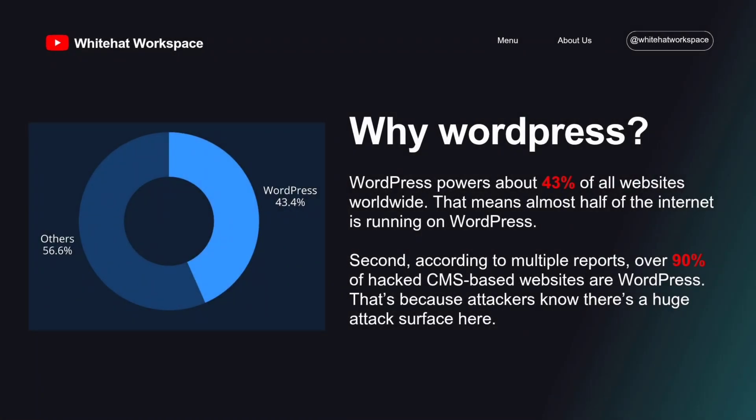Now let's understand why WordPress is such an important target in bug bounty and ethical hacking. First, WordPress powers about 43% of all websites worldwide — almost half of the internet is running on WordPress. Second, according to multiple reports, over 90% of hacked CMS-based websites are WordPress, because attackers know there's a huge attack surface here. There are more than 70,000 plugins available for WordPress, and while plugins make websites powerful, they're also a common source of vulnerabilities — from SQL injection to remote code execution. Every single year, thousands of CVEs are reported in WordPress core, themes, and plugins. This huge attack surface is exactly why WordPress is so relevant for bug bounty hunters.